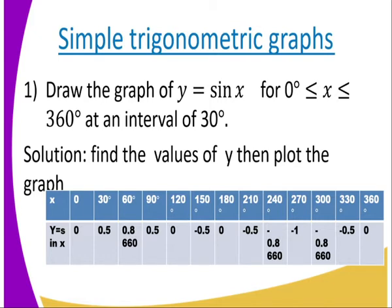270 is supposed to be negative 1, 300 is supposed to be negative 0.8660, and 360 is supposed to be 0.